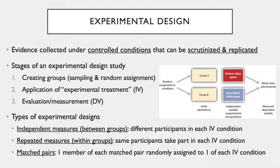Repeated measures, referred to as a within-groups design, has the same participants taking part in each of the independent variable conditions. The major pros are that individual differences are reduced and fewer people are needed. The cons are that there is potential for order effects like practice and fatigue, which can be controlled for through counterbalancing, which alternates the order of the conditions.